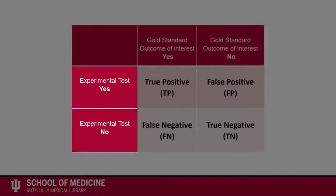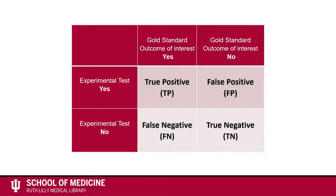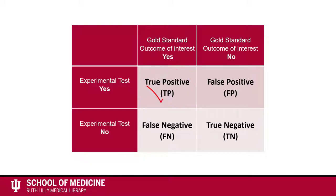The experimental test results are on the left-hand side of the 2x2 table. When looking at data in this table, the results located in the upper left-hand box are the number of experimental tests that correctly identified a positive test. They are the true positive tests.